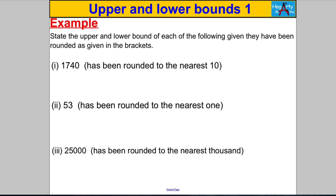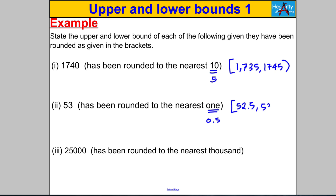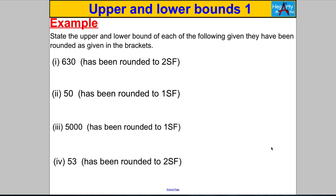State the upper and lower bound of each of the following given they've been rounded as shown in the bracket. Rounded to the nearest ten: half of 10 is 5, so lower bound is 1735 and upper bound is 1745 with curly brackets. Rounded to the nearest one: half is 0.5, lower bound is 52.5, upper bound is 53.5. Rounded to the nearest thousand: half is 500, lower bound is 24,500 and upper bound is 25,500.